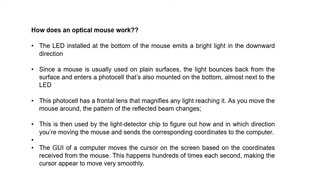As we move the mouse around, the pattern of the reflected beam changes. This is then used by the light detector chip in the mouse to figure out how and in which direction we are moving the mouse, and to send the corresponding coordinates to the computer.